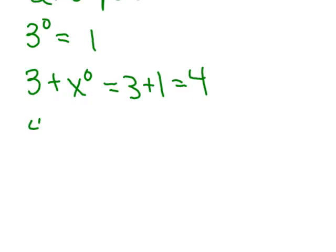If I have 4x to the 0 power, remember that exponents only affect what they touch. And what is this 0 touching? The x. So it's only x to the 0. What operation is in between the 4 and the x? Multiplication. So this is 4 times x to the 0, which means it's 4 times 1, which is 4.